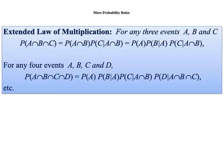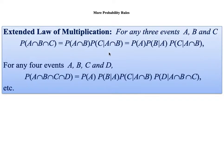We can extend the multiplication law to more than two events. For any three events A, B, and C, we're looking for the probability that all three occur. By this notation: we take the probability of A, multiply it by the probability of B given A already occurred, and multiply that by the probability of C given A and B already occurred — since whatever is the outcome in A will have an impact on B, and both A and B affect C.